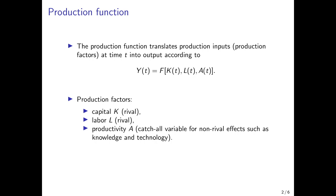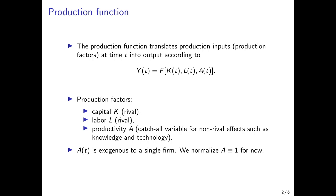Productivity is determined by the knowledge and technology available in a country. If the stock of knowledge is higher, physical capital and labor are more productive. In the basic version of most models, A_T is assumed exogenous to a single firm. In more complex models, the evolution of A_T is endogenized as firms invest in technology. For now, we abstract from this and normalize A to 1.